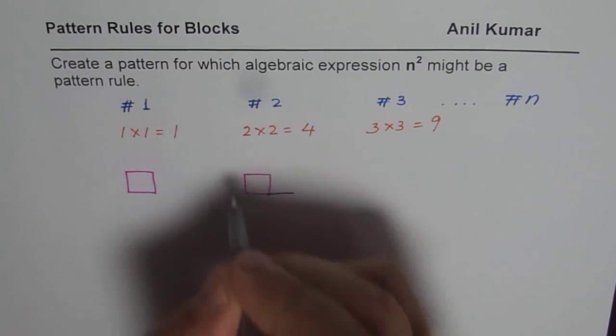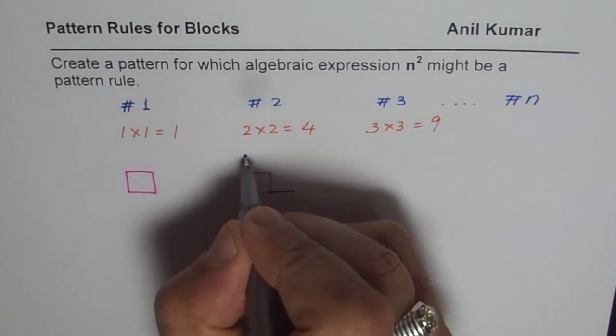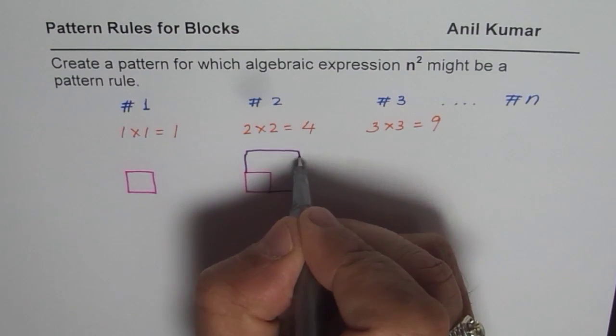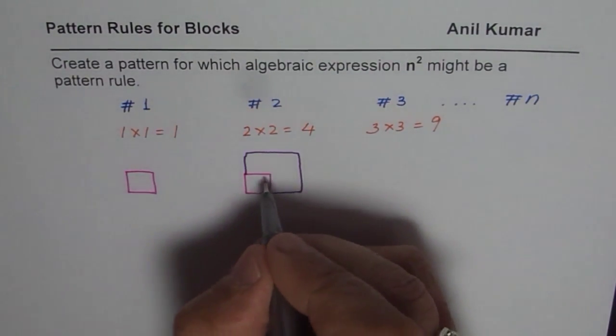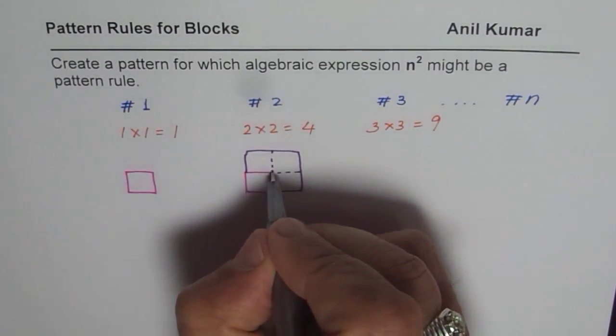So if you extend and form a bigger square, then how many squares can you make, right? Check it out. It is indeed 4, right?